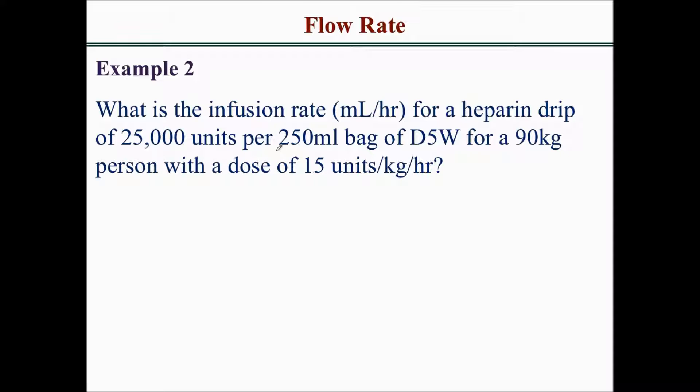There's a lot of numbers here so it's important to know the significance of each number. Every 250 mL bag of D5W has 25,000 units of heparin. A 90 kilogram patient needs to get 15 units per kilogram per hour. They want to know how many mLs per hour the patient is going to receive.